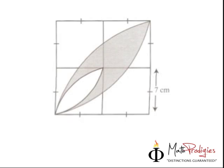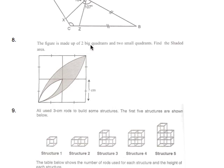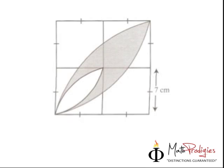So this is a blown up version of the question paper. As you can see, this shape is a little weird. But you must read the question in order for you to understand how to do this. The question says the figure is made up of two big quadrants and two small quadrants. Now that is your clue to finding out the shaded area. So let's take a look for the two big quadrants and the two small quadrants.